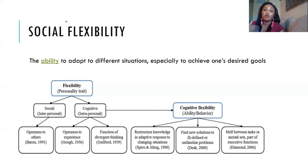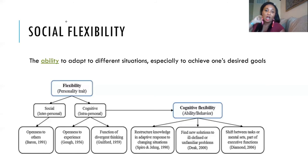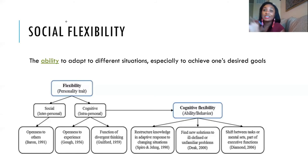Moving on, these things then lead us to our cognitive flexibility — how flexible is our thinking, our ability to think, which then leads to the behaviors that we choose to respond with. In our cognitive flexibility, we're looking at three main things. The first is restructuring knowledge in an adaptive response to changing situations. Essentially, what we know, we're able to restructure and adapt depending on the situation — and a lot of people don't know how to do this.